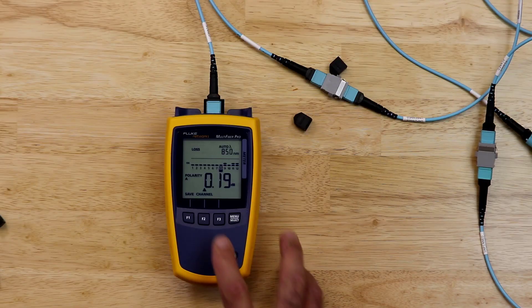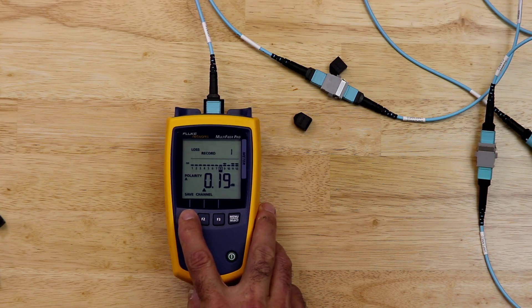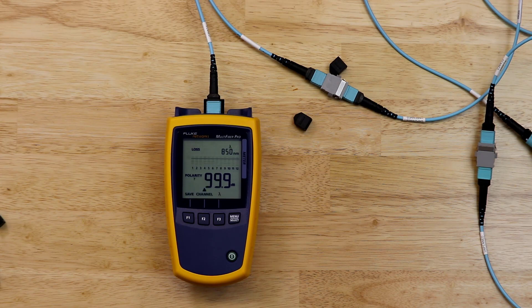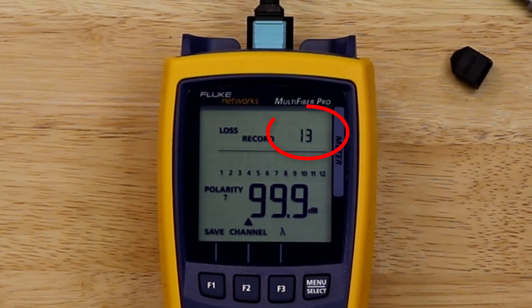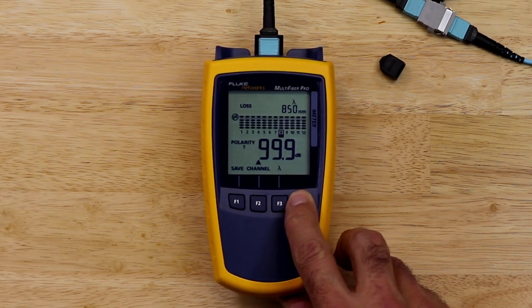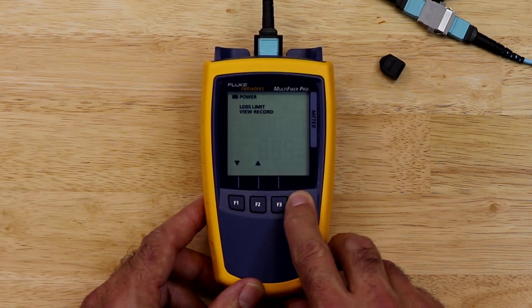After the measurement process is complete, I will press F1 to save the loss readings for each of the 12 fibers. The number in the upper right on the meter will show us the starting channel for the next group of tests to be saved. Each time you save the test results, this number will be incremented automatically. Should you need to delete a set of measurements, press the menu select button for three seconds.